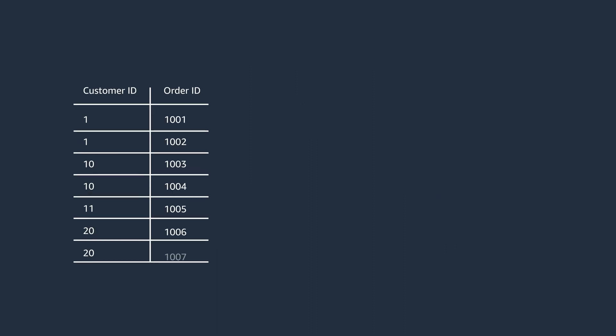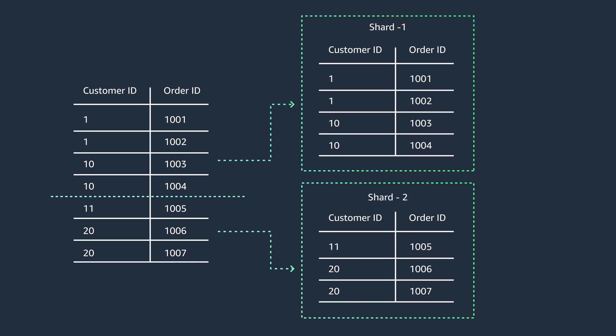Here is the customer order database, which has customer ID, order ID, and number of other columns. The cardinality of customer ID in this example is 20. Let's take the average number of orders per customer to be balanced across the first 10 customers and the next 10 customers. We split the customer database using customer ID as the shard key with range-based partitioning.